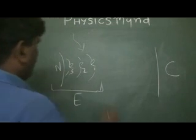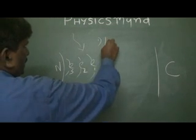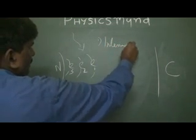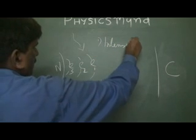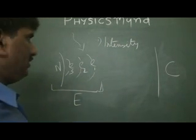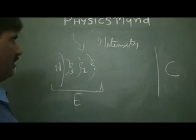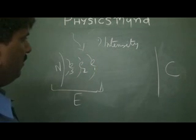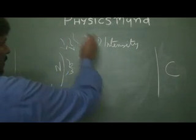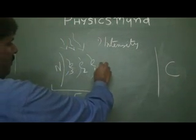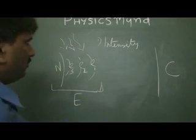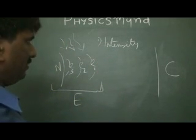The first factor is intensity. Intensity means the amount of light falling onto the photoelectric plate, and as the intensity increases, the number of electrons released also increases.